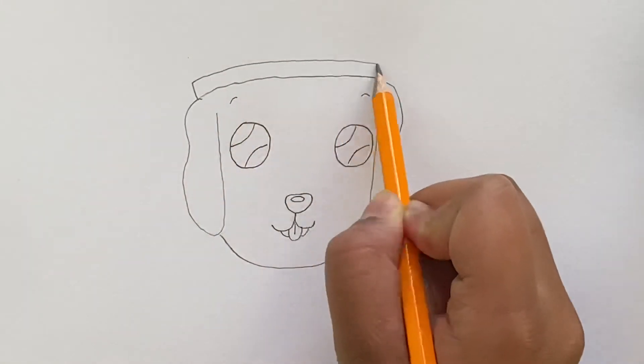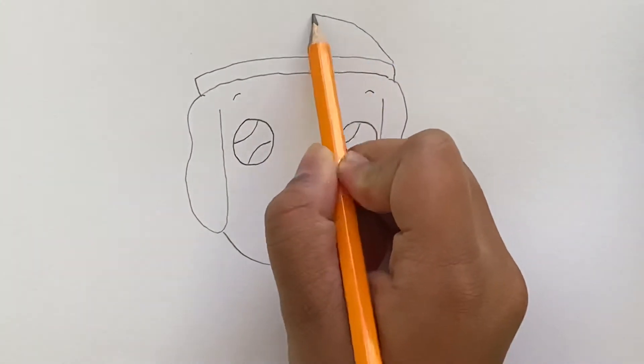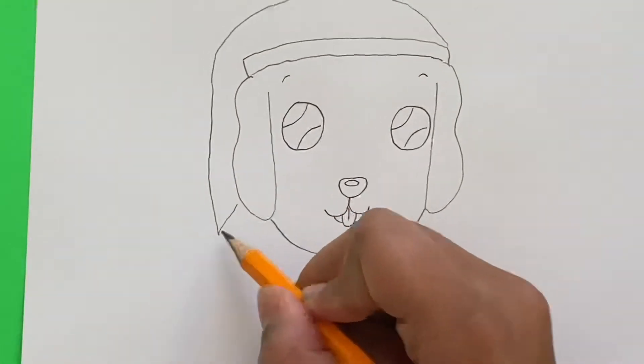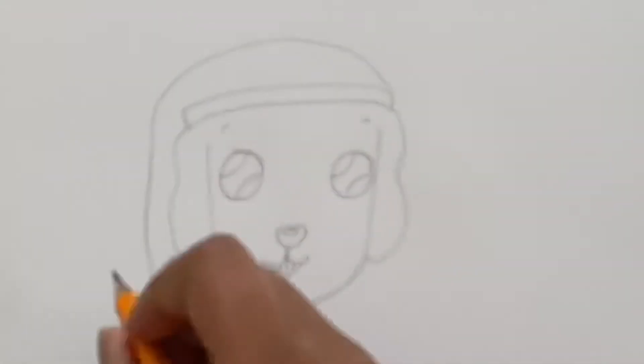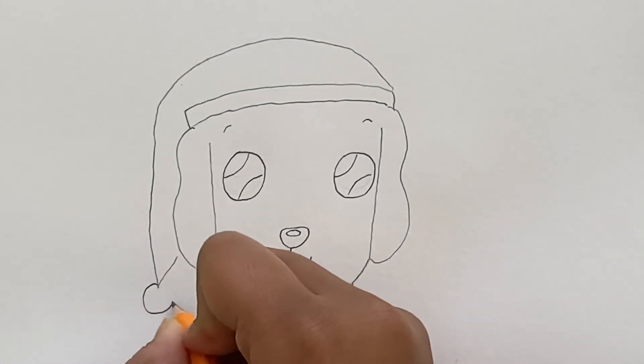So first we're going to draw the white fluffy part, and then we're going to make the overall shape. Now we're going to draw the little pom-pom.